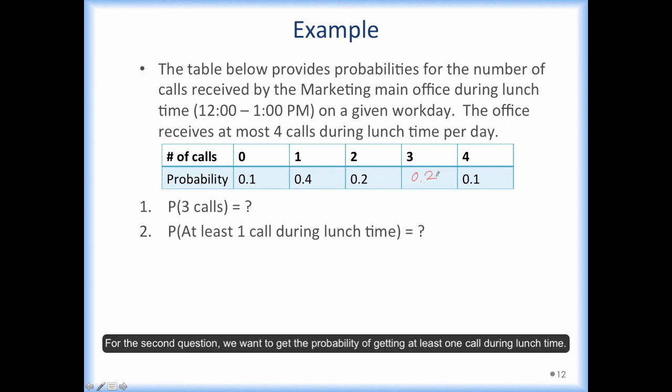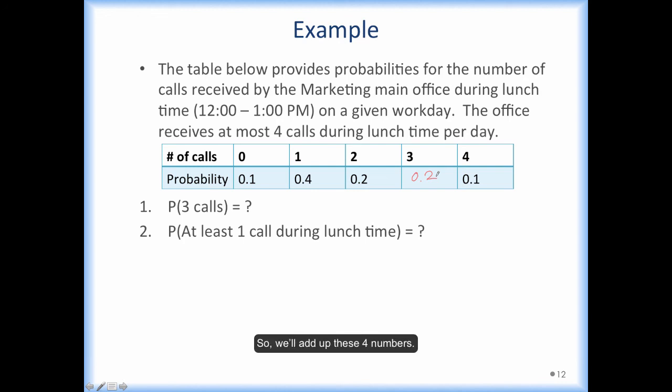For the second question, we want to get the probability of getting at least 1 call during lunchtime. We know that we can get this probability by adding up all the probabilities of the sample points that are included in this event. So we will add up these four numbers, and then we will get the answer, which is 0.9.